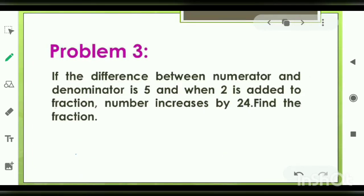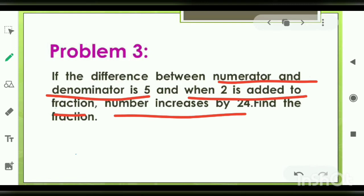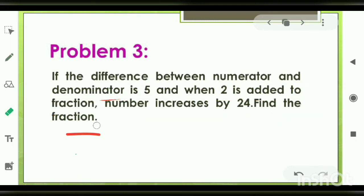Let's read the third question. If the difference between the numerator and the denominator is 5, when 2 is added to the fraction, the fraction is increasing by 24, you have to find the fraction. If you assume the fraction as x by y, then you are supposed to find both x and y.